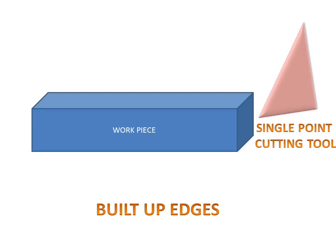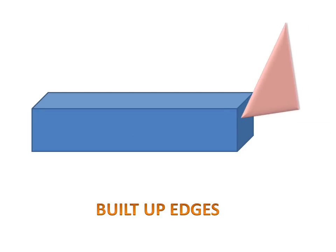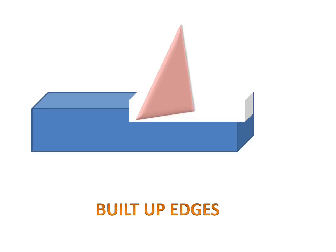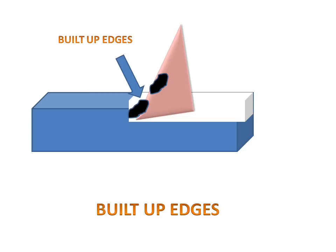The last type is built-up edges. We have a workpiece and a single point cutting tool. When the single point cutting tool travels on the workpiece, it will remove material, but due to high friction between the tool and the workpiece, built-up edges will be formed. These built-up edges are chips welded to the tool, which affect the tool quality and reduce the efficiency of the tool, cutting speed, and cutting efficiency.